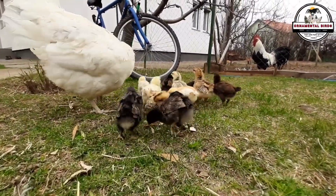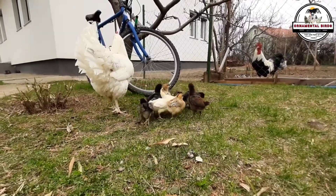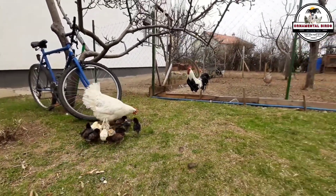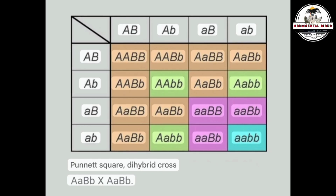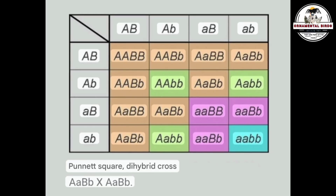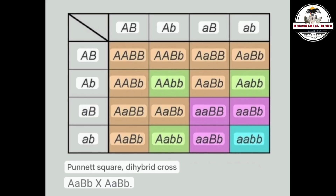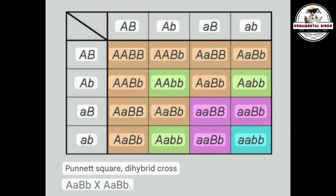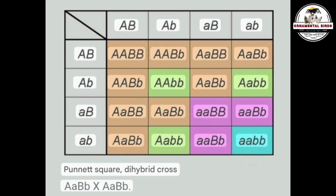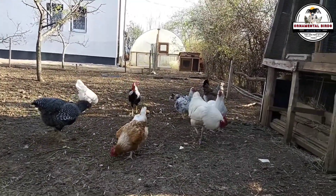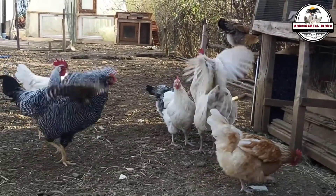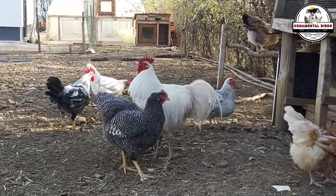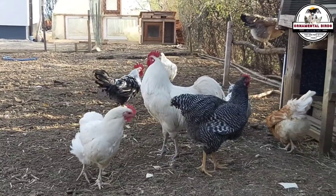For centuries breeding seemed like a lottery, but today we have an incredible tool that gives you the power to predict results — the Punnett square. It's not just a square with letters; it's a map of the genetic probabilities of your next chicks. By simply understanding the genotype of your parents, you can use the Punnett square to visualize the possible gene combinations in your offspring. You can predict the probability of chicks being born with barred plumage, a single comb, or feathered legs. It allows you to make strategic decisions instead of just crossing your fingers and hoping for the best.